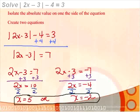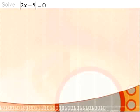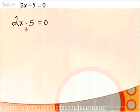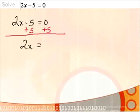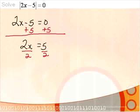Next, solve the absolute value of 2x minus 5 equal to 0. This is an example where you'll only have one possible answer, because we can't make 0 positive or negative. The absolute value is already isolated, so we create one equation: 2x minus 5 equal to 0. Adding 5 to both sides gives 2x equal to 5. Dividing both sides by 2 gives x equal to 5 halves. You can leave it as an improper fraction.